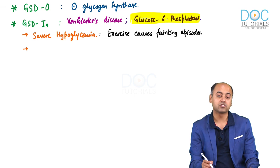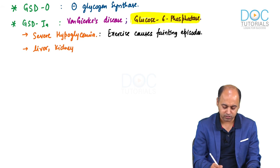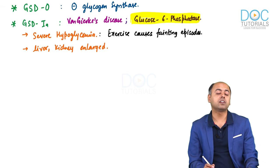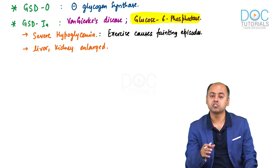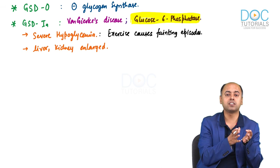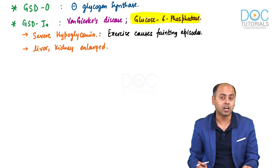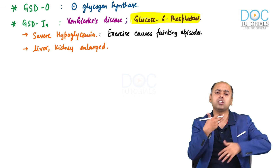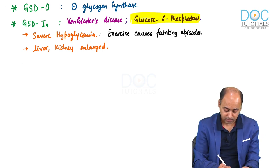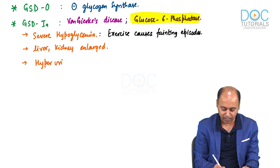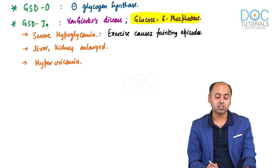Regarding organomegaly, glucose-6-phosphatase is present only in two tissues: the liver and the kidney. So these are the two organs which are going to be enlarged. When glucose-6-phosphatase is absent, glucose-6-phosphate will be upregulated, which is a substrate for the HMP shunt. When a lot of glucose-6-phosphate accumulates, glycolysis gets saturated and HMP shunt is also upregulated, particularly in the liver, resulting in lots of purine formation.